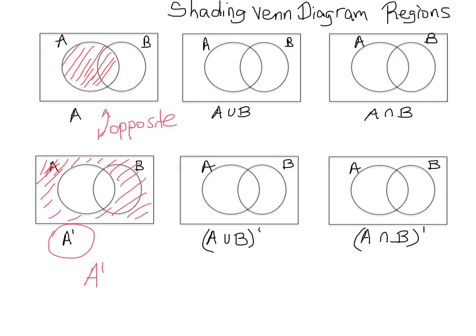Now we're going to move on to A union B. What that tells us to do is shade everything in both sets — everything in A as well as everything in B. Whenever you see union, all of A gets shaded as well as all of B.